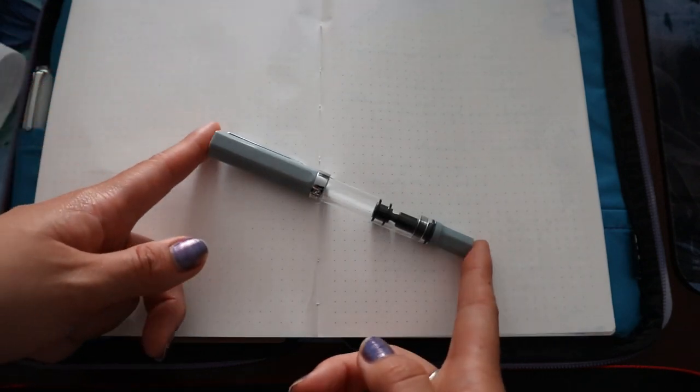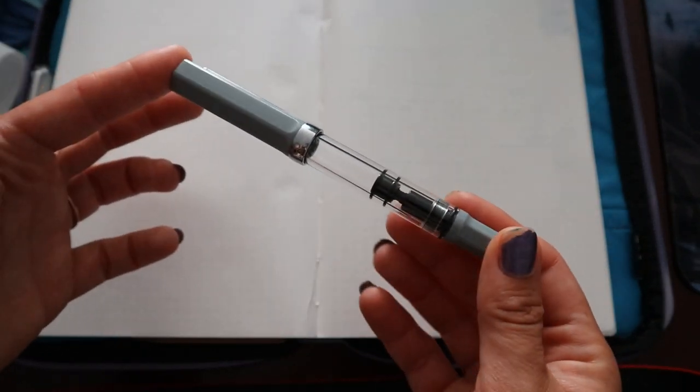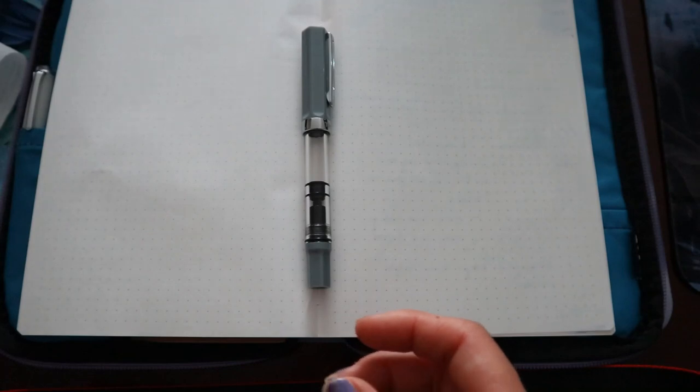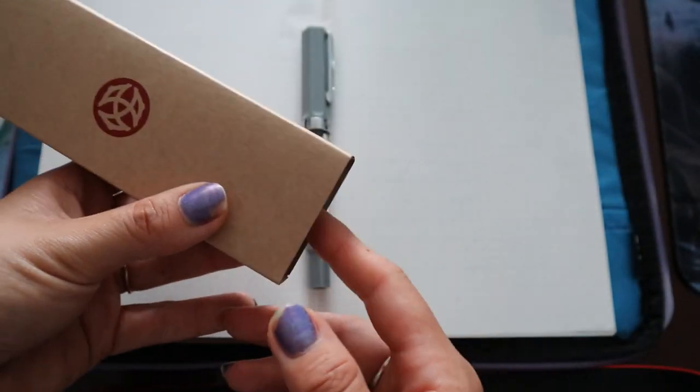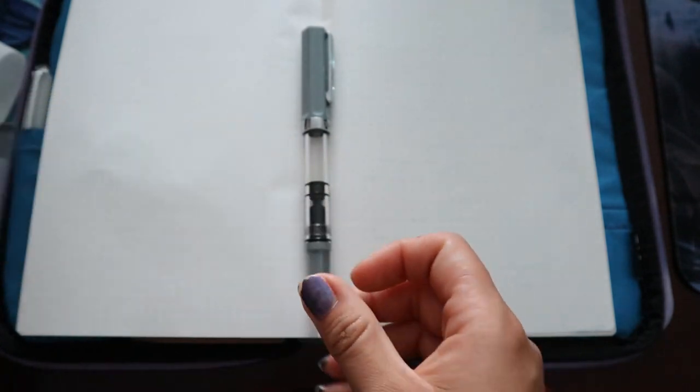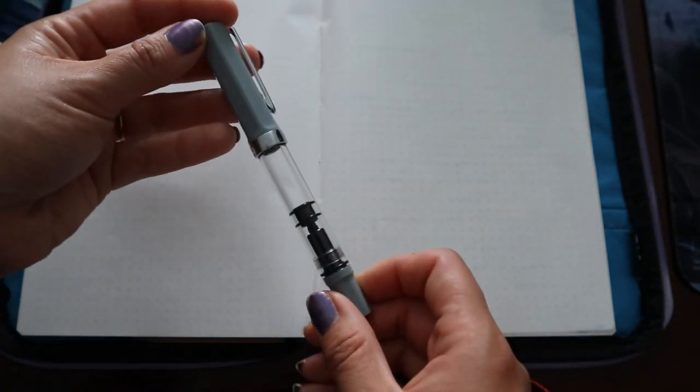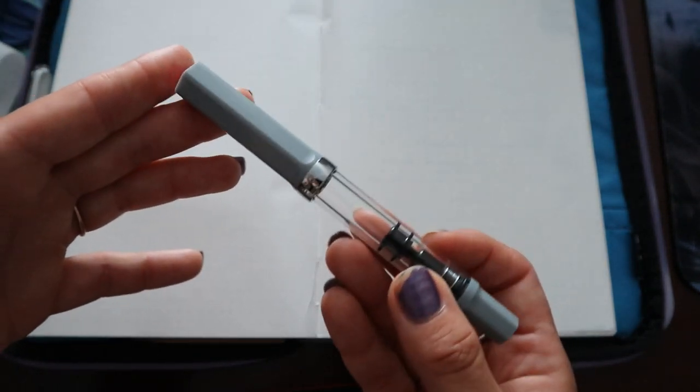Okay, here we are with the Cement Grey TWSBI Eco. It comes in the regular eco box with a wrench and some silicone grease, and it is a weird color in my opinion.